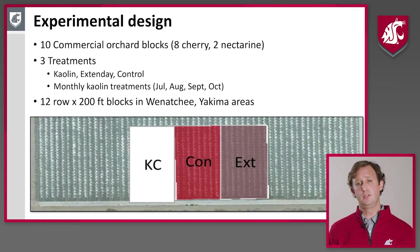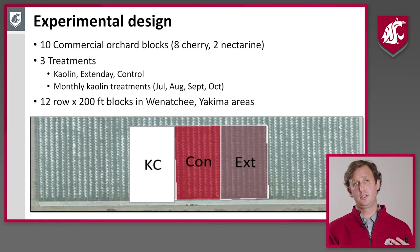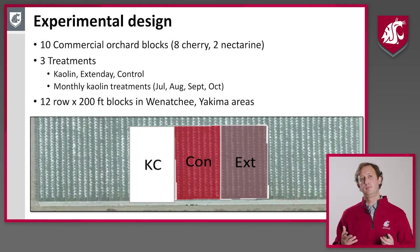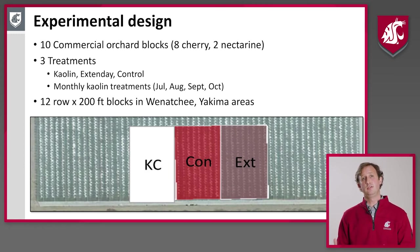The experimental design involved 10 different commercial orchards — eight cherry and two nectarine — with three treatments: kaolin, Extendate, and control. Each treated section was 12 rows by 200 feet long. We kept in mind that these can't be done on a small bioassay scale, so we worked at larger scales. We had larger block sections and randomized the order of treatments, and because we had many different blocks, we could evaluate variability between groups and randomize their arrangement.